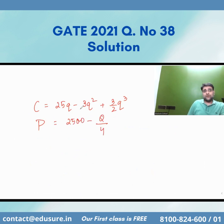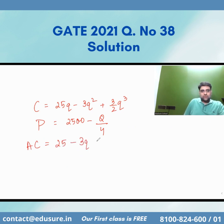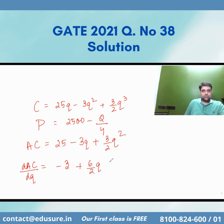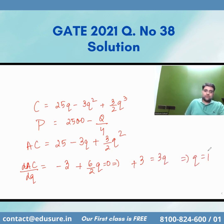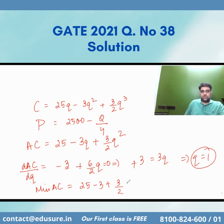Now I need to find out the number of firms in equilibrium. The average cost is 25 minus 3q plus 1.5q squared. Taking the derivative and setting it to zero: minus 3 plus 3q = 0, so q = 1. The minimum average cost is 25 minus 3 plus 3/2, which gives 23.5, or 47/2.